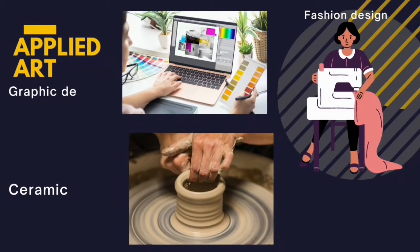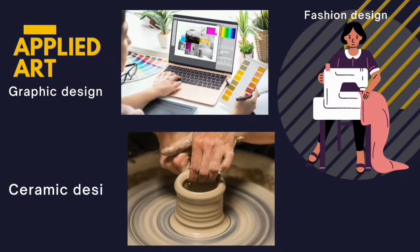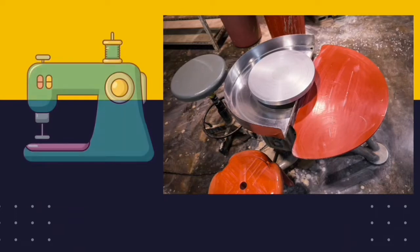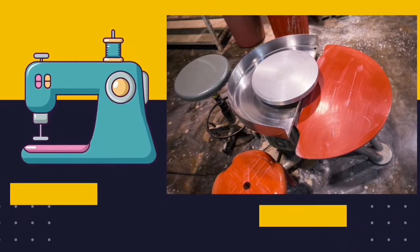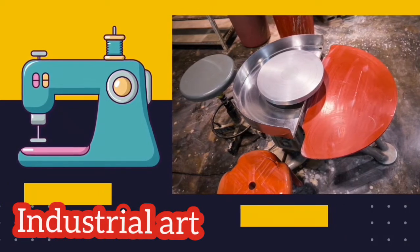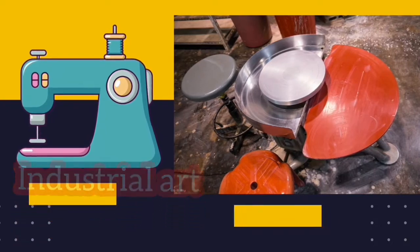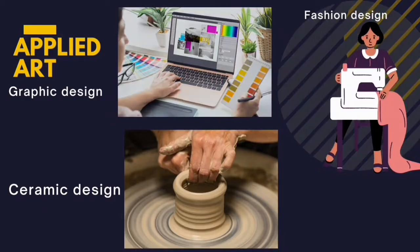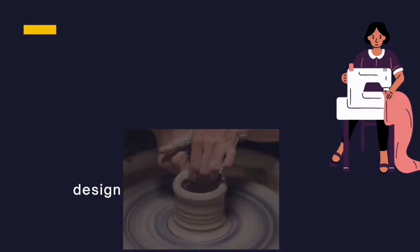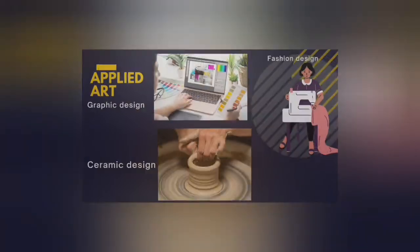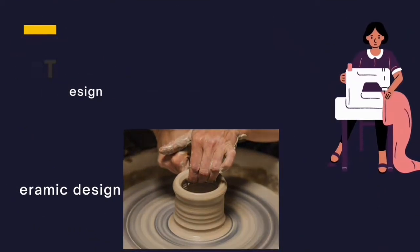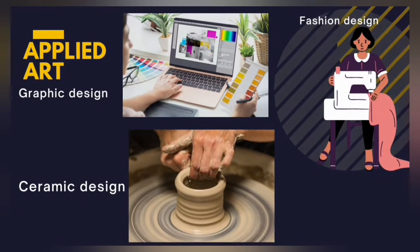Now let's look at the other branch of visual arts, which is applied arts. Applied art is also referred to as industrial art because it makes use of machines in its production processes. Areas under applied arts include graphic design, which makes use of a computer, and ceramic design, which makes use of a train wheel.